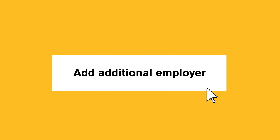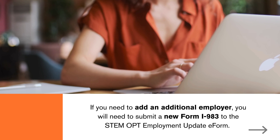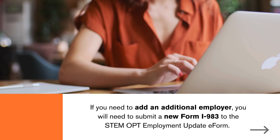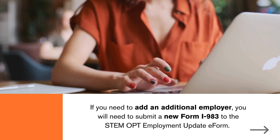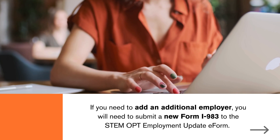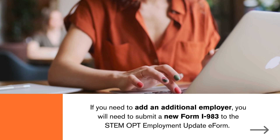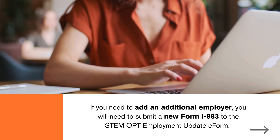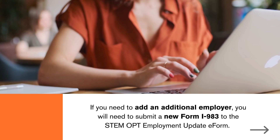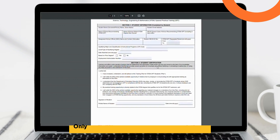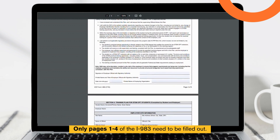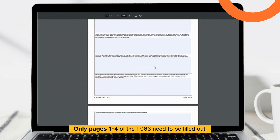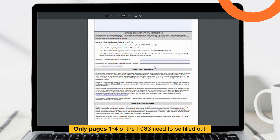Add additional employer: if you need to add an additional employer, you will need to submit a new Form I-983 to the STEM OPT Employment Update e-form. Only pages 1 to 4 of the I-983 need to be filled out.